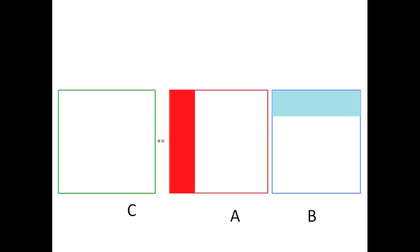It turns out that any individual column panel of A times row panel of B can actually achieve extremely high performance. So the question now becomes, how can we make this smaller problem achieve very high performance?